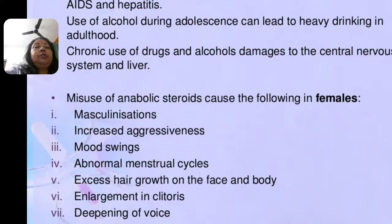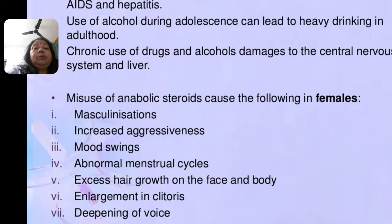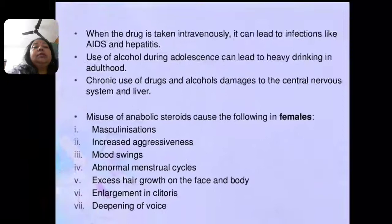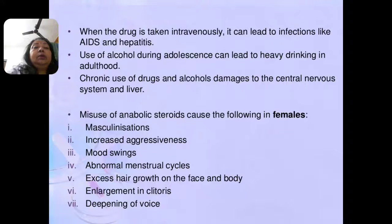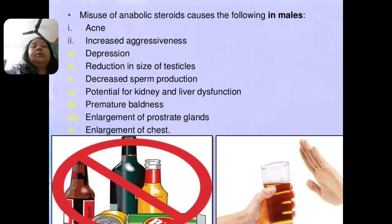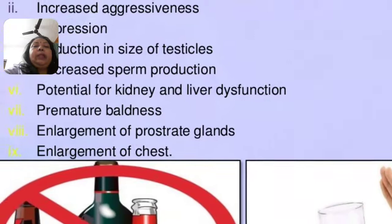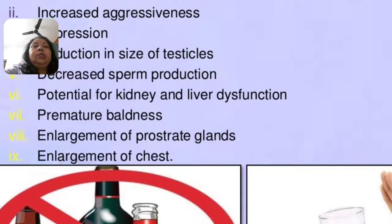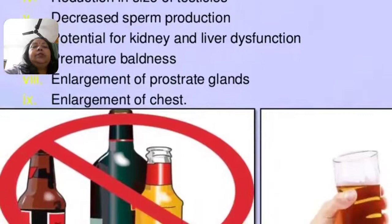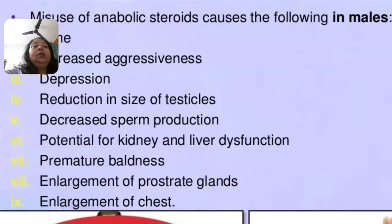Misuse of anabolic steroids causes the following effects in females: masculinization, increased aggressiveness, mood swings, abnormal menstrual cycles, excessive hair growth on the face and body, enlargement of the clitoris, and deepening of the voice. In males, the signs include acne, depression, mood swings, premature baldness, kidney and liver dysfunction, enlargement of the prostate gland, and enlargement of breast tissue. Depression is a main sign in males.